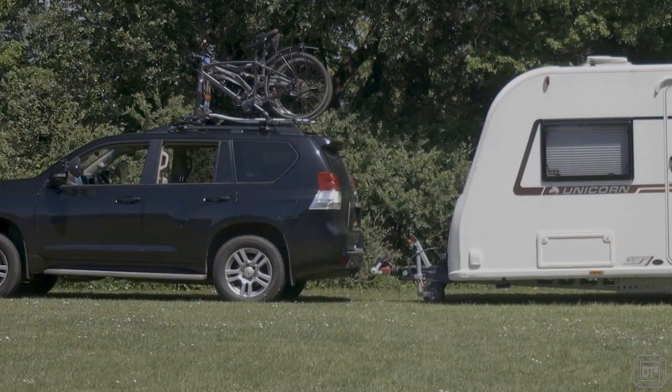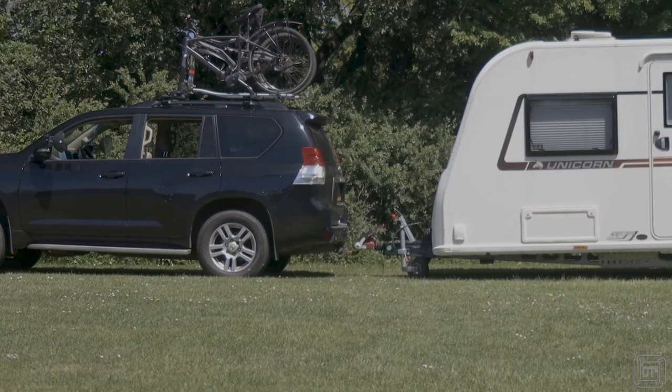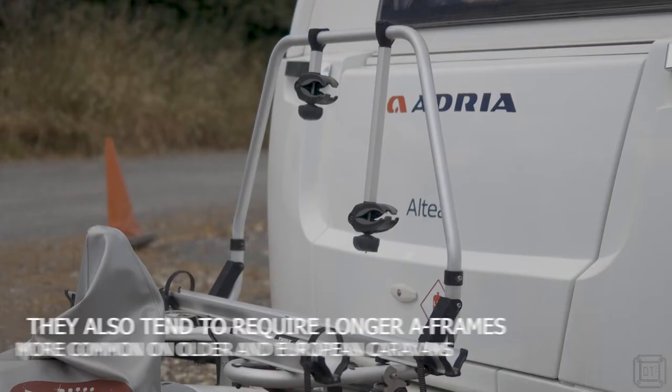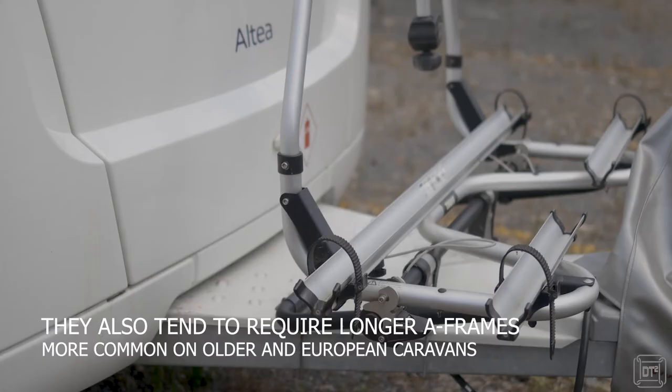When carrying bikes in or on the caravan weight is the biggest concern and you need to ensure that you are not going to exceed the caravan's maximum loaded weight. In terms of carrying bikes on the caravan there are some carriers that mount here on the A-frame. I haven't tried these and my main concern would be weight especially on the tow bar.